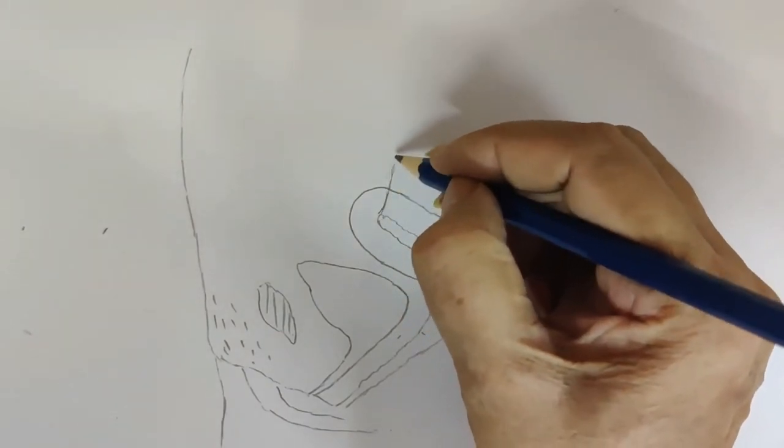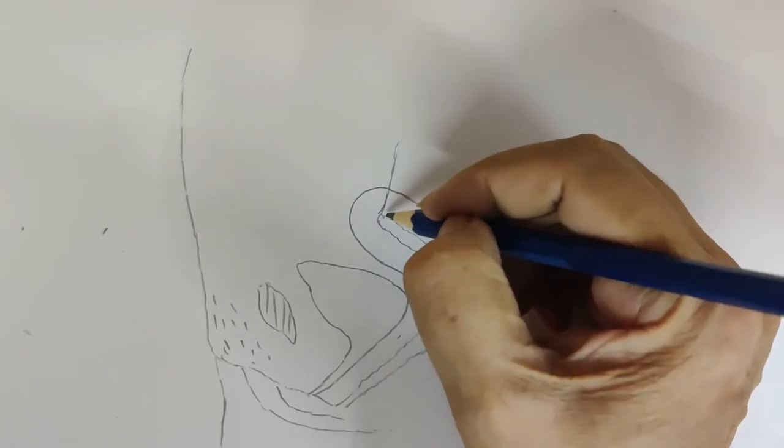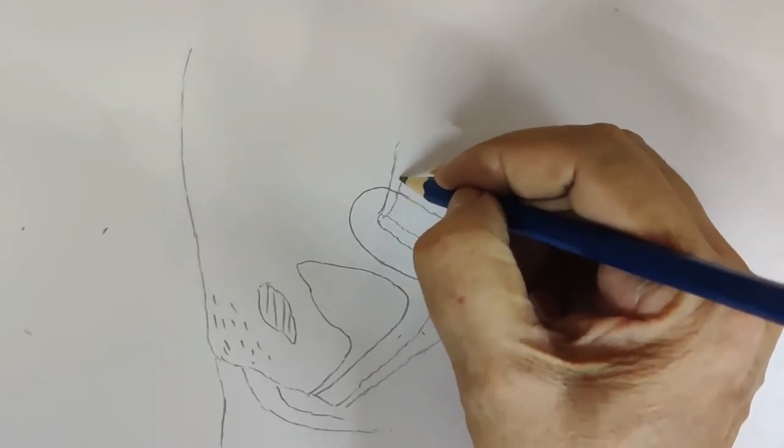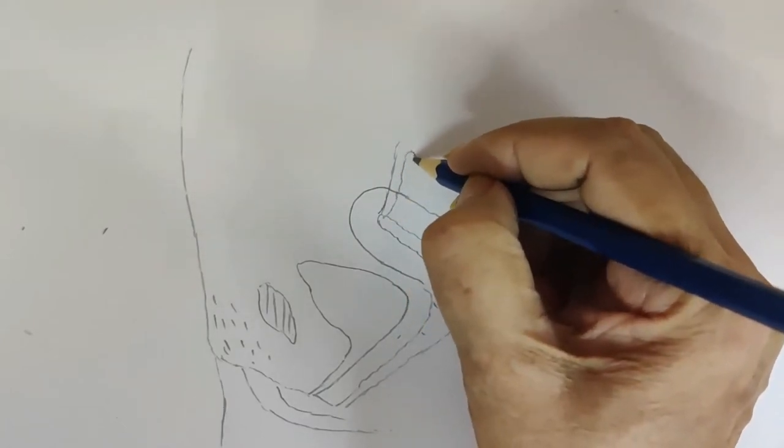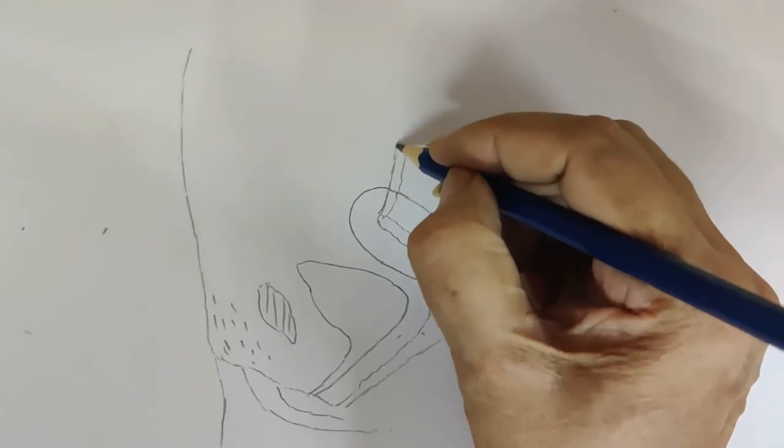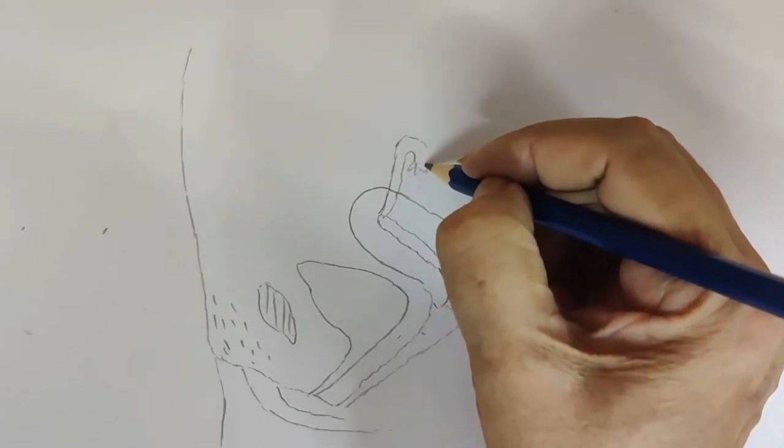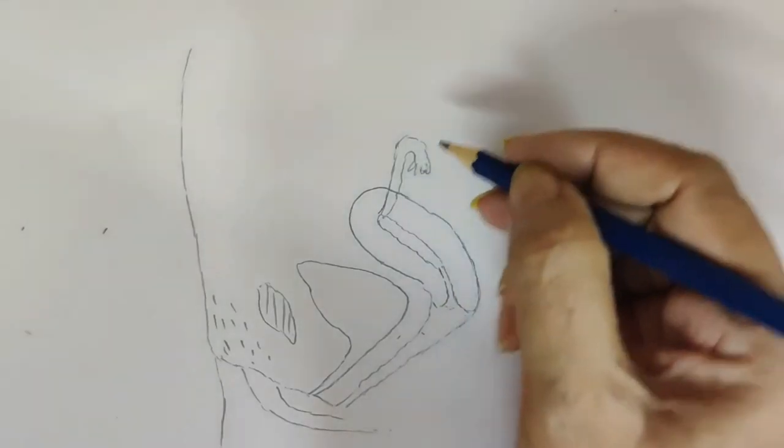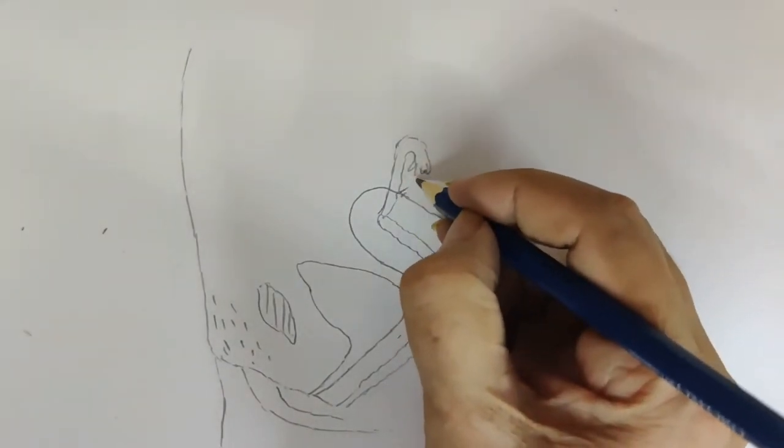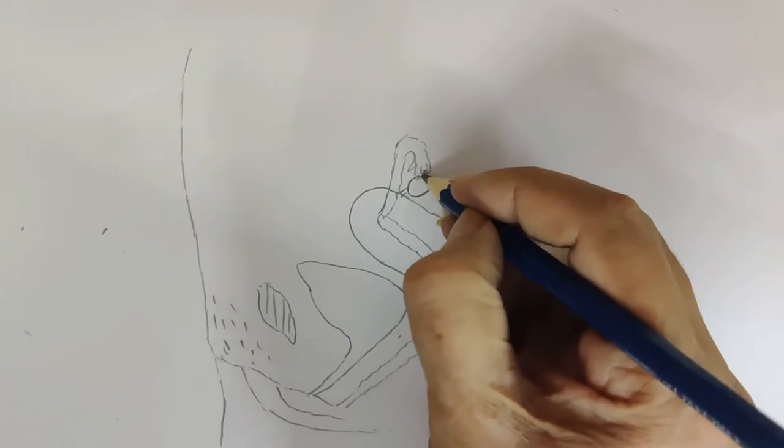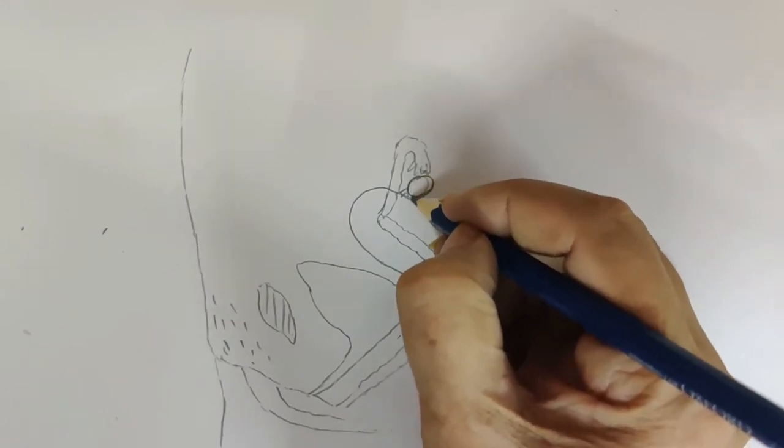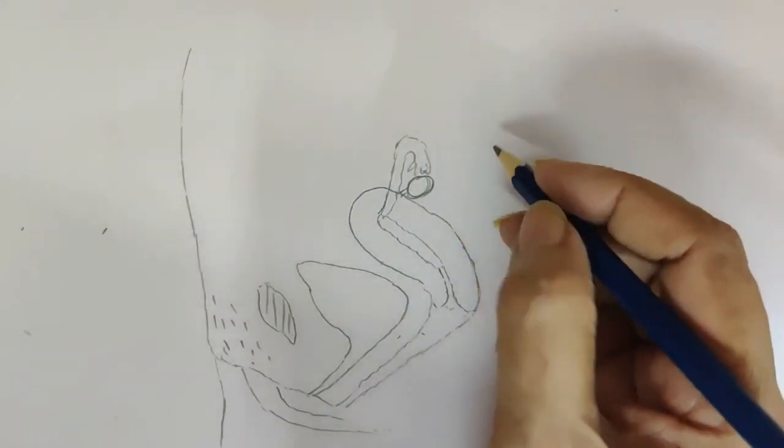The uterus is connected to the narrow fallopian tubes. Show the fallopian tube: isthmus, ampulla, and infundibulum. These are the fimbria. The ovary is attached here. There are two ovaries, each ovary about 2.5 inches.